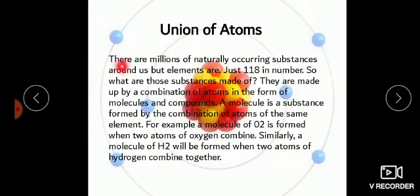Union of Atoms. There are millions of naturally occurring substances around us, but elements are just 118 in number. Hamare surrounding mein bhoat saare substances mojood hain, lekin un mein jo elements hain woh 118 hi hain — 118 se zyada element nahi hain. So what are those substances made of? They are made by a combination of atoms in the form of molecules and compounds.